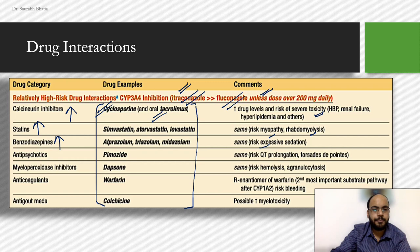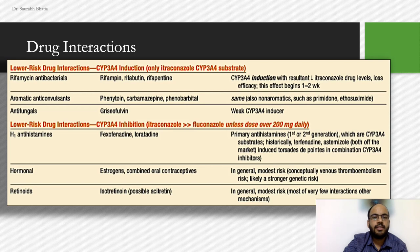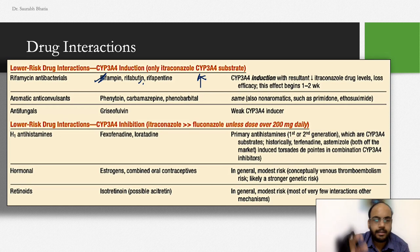Lower-risk interactions include rifampicin and rifabutin, which increase the metabolism of fluconazole, thereby decreasing its drug levels. This was covered in detail during the itraconazole lecture and is more or less the same for fluconazole.